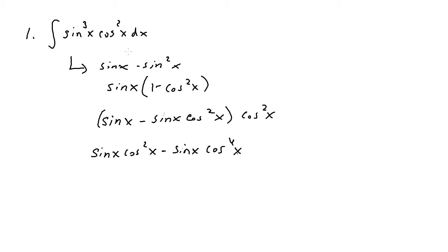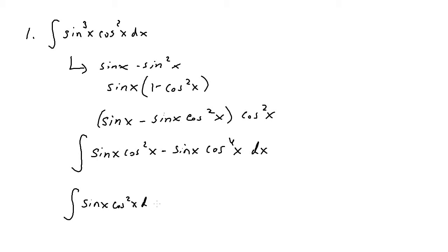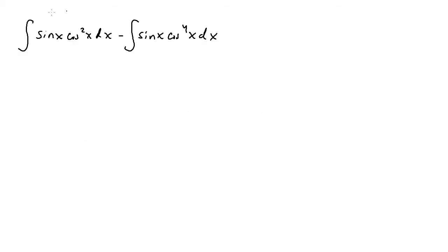Now I can put the entire thing underneath the integral, so the integral of the entire thing with dx. Since there is a minus sign I can split it into two different integrals: the integral of sine of x times cosine squared of x dx, minus the integral of sine of x times cosine to the fourth x dx.